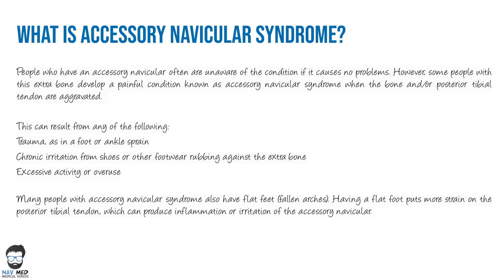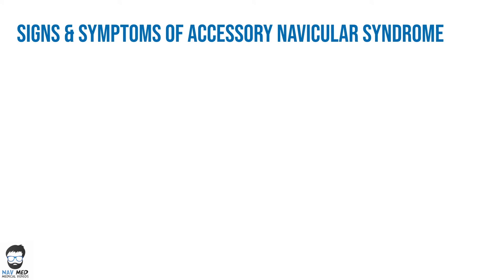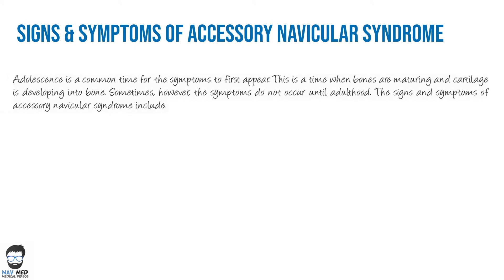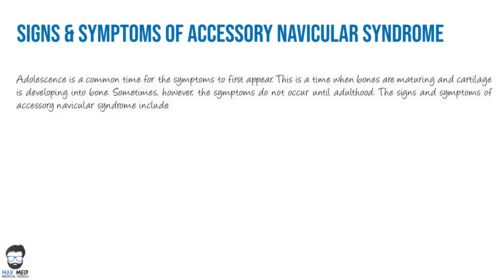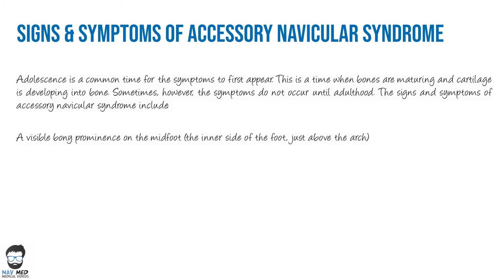Let's look at the signs and symptoms of accessory navicular syndrome. Most symptoms usually appear in late teenagers or adolescents — the time when bones are maturing and cartilage is developing into bone. However, symptoms can sometimes not present until the person is an adult. Signs and symptoms include a visible bony prominence on the midfoot on the inner side of the foot, as well as redness and swelling of this bony prominence.